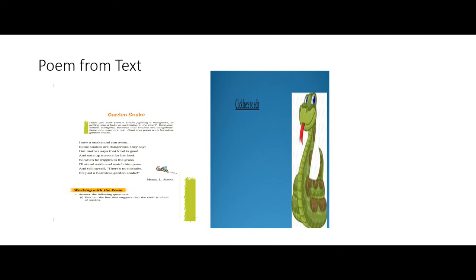The poem reads: 'I saw a snake and ran away. Some snakes are dangerous, they say.' Here, 'they say' refers to people in general. But the poet's mother says this kind of snake is not dangerous at all — she says it is good and eats up insects for its food. 'So when he wiggles in the grass, I'll stand aside and watch him pass, and tell myself there's no mistake, it's just a harmless snake.'